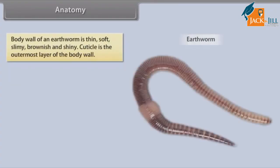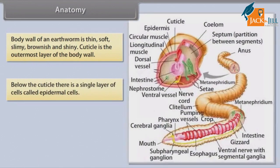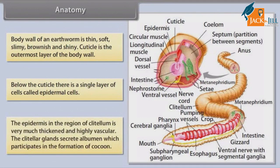Anatomy: The body wall of an earthworm is thin, soft, slimy, brownish, and shiny. The cuticle is the outermost layer of the body wall. Below the cuticle there is a single layer of cells called epidermal cells. The epidermis in the region of the clitellum is very much thickened and highly vascular. The clitellar glands secrete albumin, which participates in the formation of the cocoon.